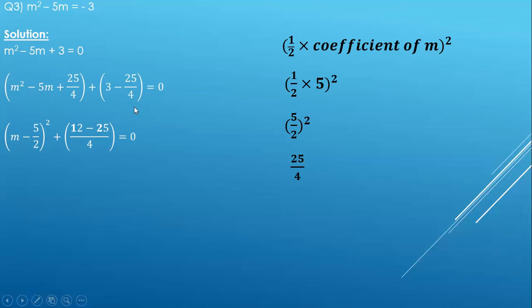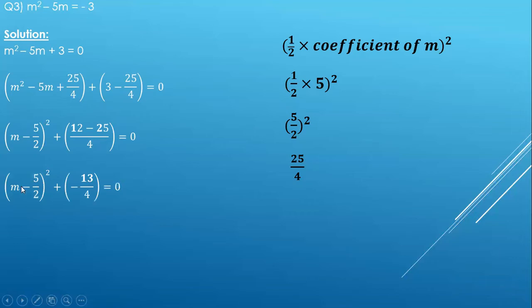For the constant part, we cross multiply 4 with 3 to get 12, giving us 12 minus 25 upon 4. So we have m minus 5 upon 2 the whole square, plus 12 minus 25 upon 4, which equals m minus 5 upon 2 the whole square plus minus 13 upon 4, since 12 minus 25 is minus 13.